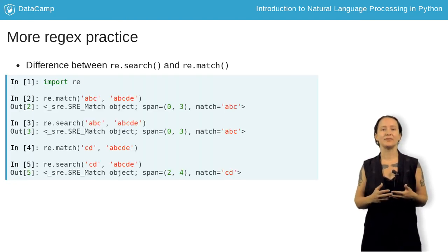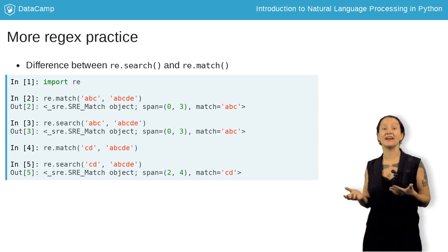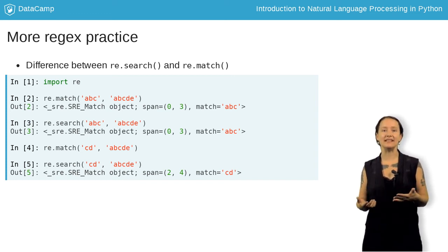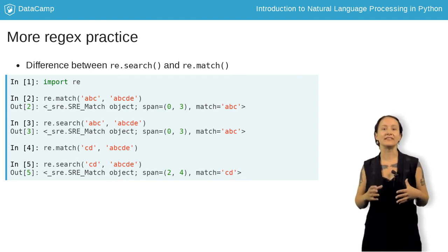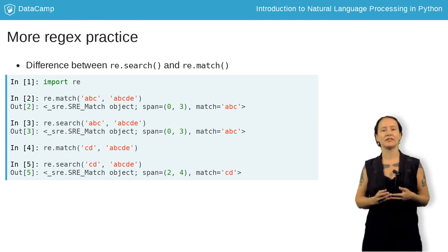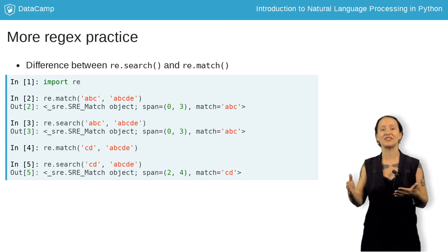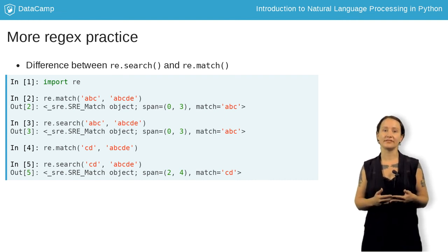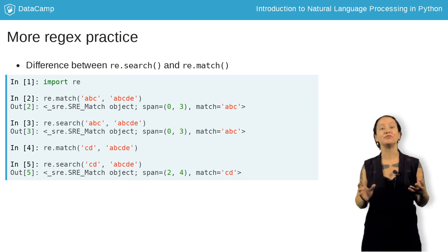When we use search and match with the same pattern and string, when the pattern is at the beginning of the string, we can see we find identical matches. This is the case with matching and searching ABCDE with the pattern ABC. When we use search for a pattern that appears later in the string, we get a result, but we don't get the same result using match. This is because match will try and match a string from the beginning until it cannot match any longer. Search will go through the entire string to look for match options.